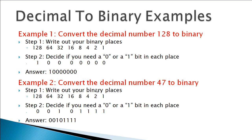How about the number 47? We write out our chart and plug in a 1 where we need to. If I put a 1 in the 128s place I go way over 47; same with 64. I can do 32, so I add that in. 32 plus 16 is 48 — that's over — so I have a 0 in the 16s place. 32 plus 8 is 40, so I'm good there. 40 plus 4 is 44, plus 2 is 46, plus 1 is 47. Final answer: 00101111.